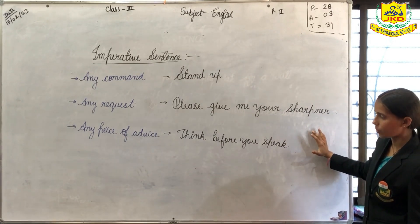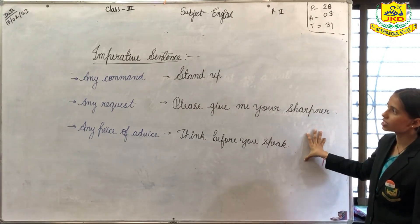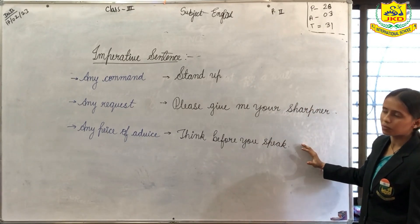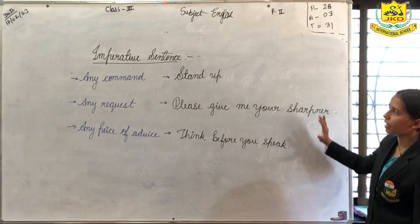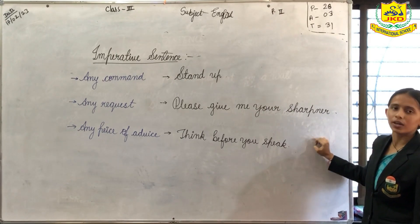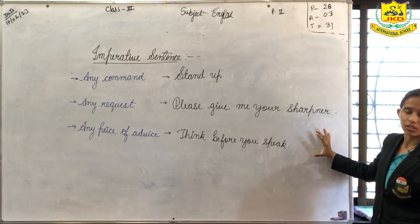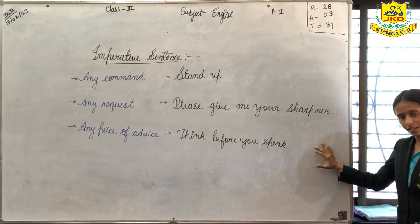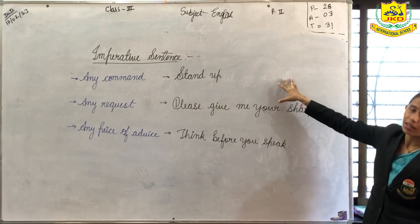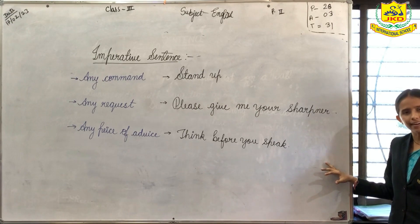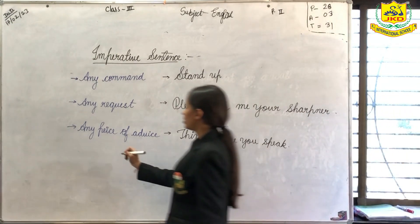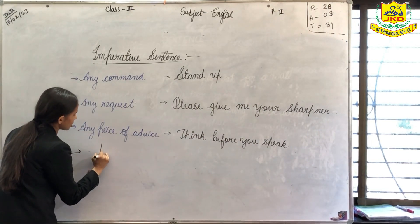And third is any piece of advice. Whenever you give any advice, all such type of sentences also come under imperative sentence. For example, think before you speak, or speak wisely — any such sentence could come under imperative sentence. Imperative sentence either ends with a full stop or an exclamatory mark. It depends on the force and how you are speaking. For example, if you say it in a normal tone like 'stand up', then we would use a full stop. But if you say it more forcefully like 'stand up!', then we would use an exclamatory mark. So in this, we can use either a full stop or exclamation mark.